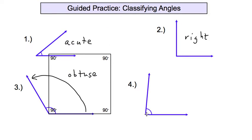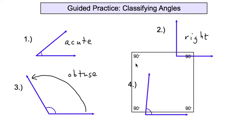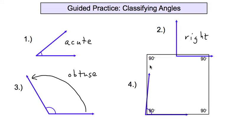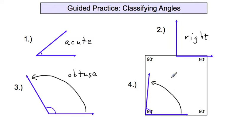The last one is pretty close to 90 degrees, so let's put our square corner up to the vertex and see — measuring from one ray to the other, it doesn't quite reach all the way up to the 90-degree line, so this one is also an acute angle.